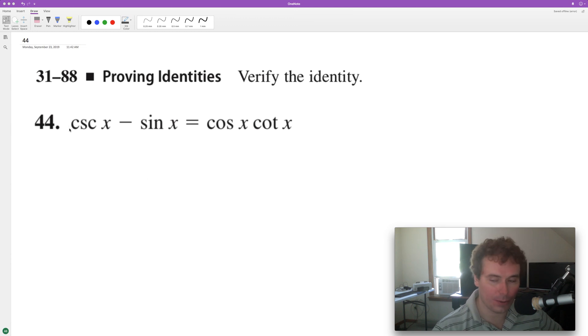We're going to break this identity down, making the left look like the right. Starting off, we'll break this down to its basic components. Cosecant is the same thing as 1 over cosine x minus sine x.